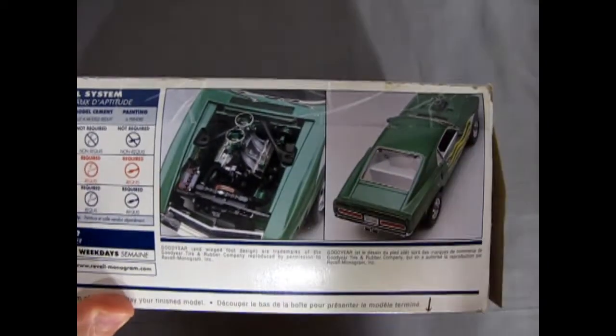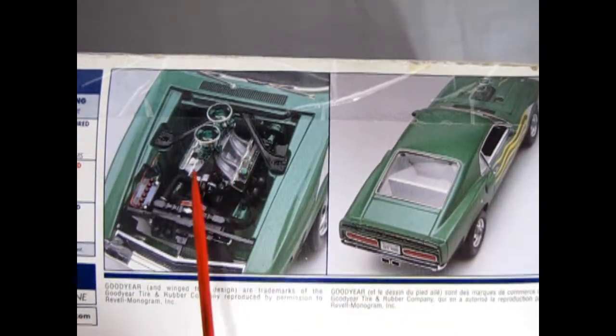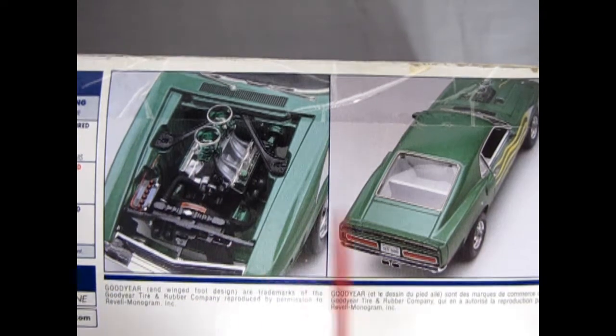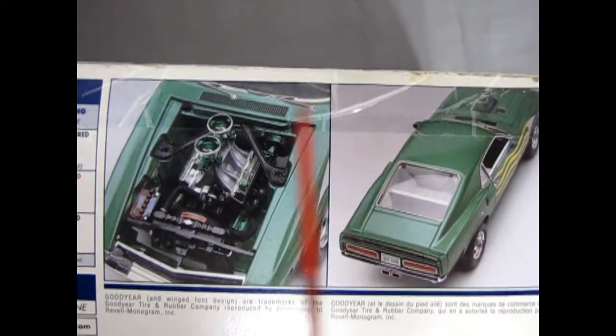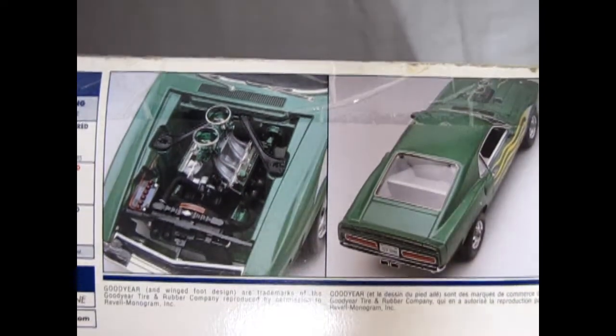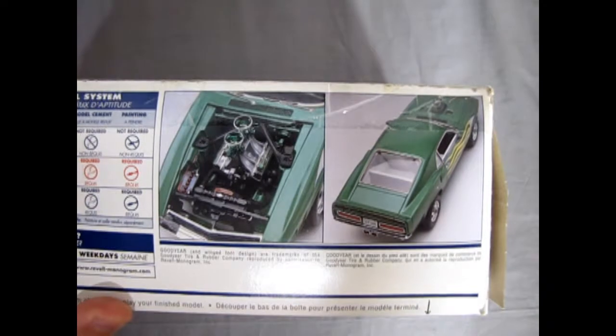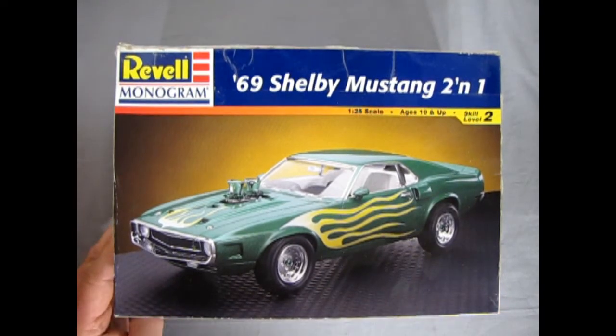This is our built up model kit. You can see that big high-rise manifold with the dual carburetors. And then the back of the Mustang of course. This lid did rip off. It was re-taped as we'll see. Actually one cool feature on the bottom of the box is a bit of highway. So you can display your model car on the box.